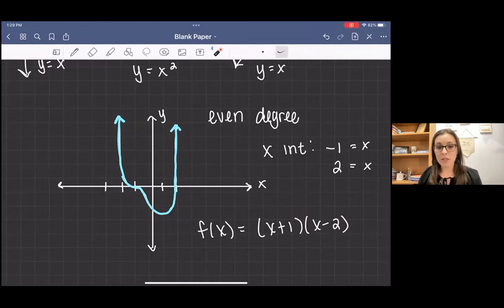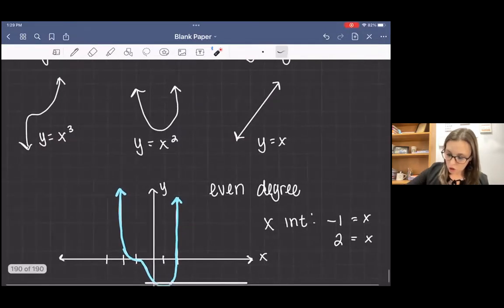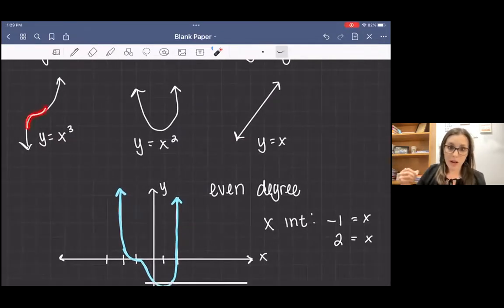But I was given the graph, and so I need to pay attention to the behavior of the graph at those points. At one, sorry, negative one, my function jogs through, which mirrors a jogging x to the third.